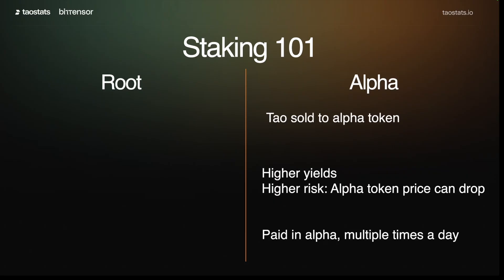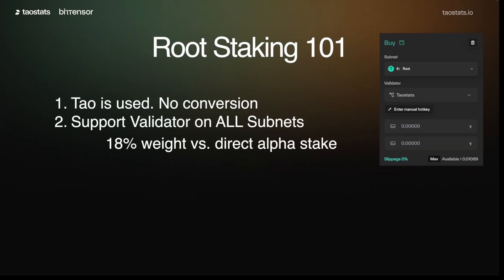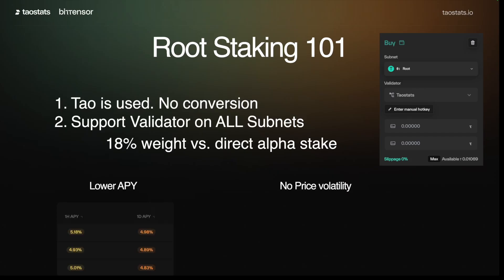Alpha rewards are paid in alpha multiple times a day. Now let's look at root staking. When you stake on root, it's all in TAO — there's no conversion. You're supporting your validator on all the subnets that they're active on. Because you're spreading it across all of those, your stake weight is 18% that of a direct alpha stake. That makes a difference in how much return you're going to get, and you'll see that the APY on root is lower.